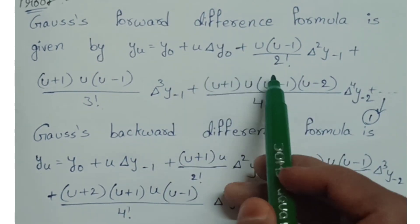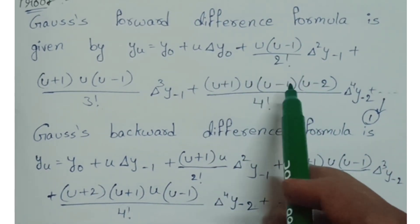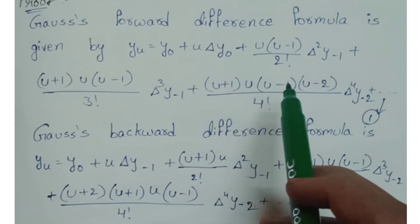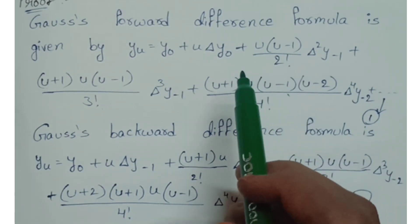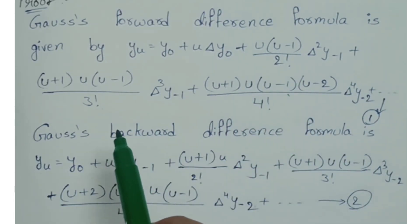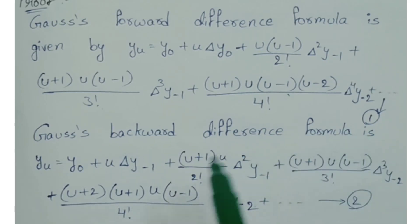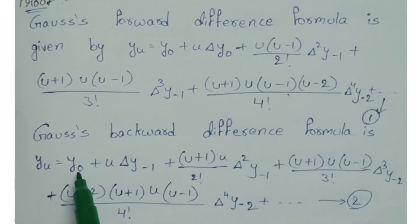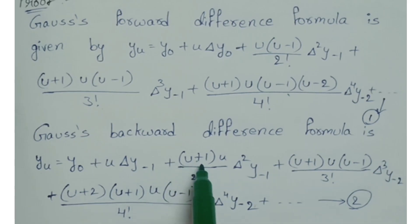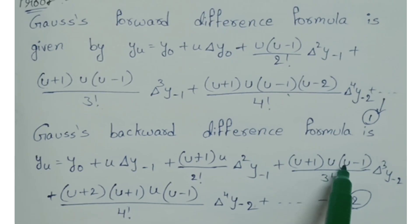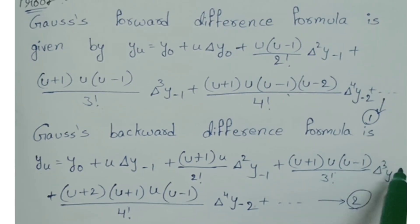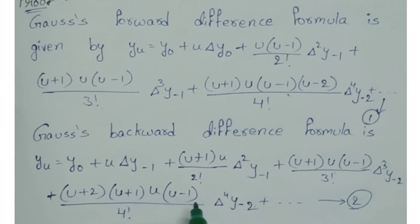Gauss forward — okay. Gauss backward is a very important question. Gauss backward formula: y(u) equals y0 plus u delta y minus 1 plus (u plus 1)u/2! delta squared y minus 1 plus (u plus 1)u(u minus 1)/3! delta cubed y minus 2 plus (u minus 1) multiplied 2! delta to the 4th y minus 2 and so on.